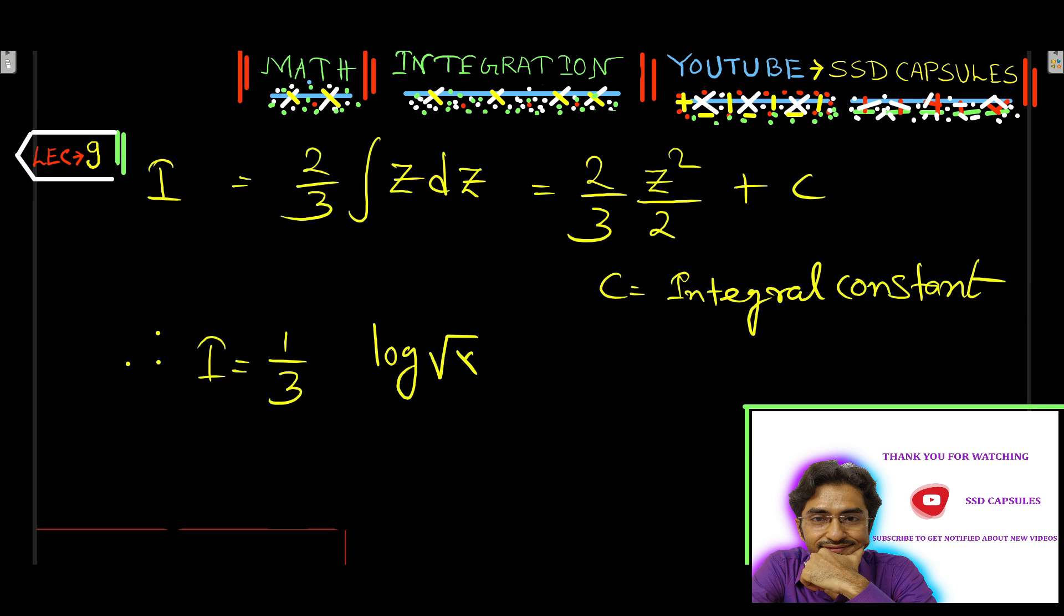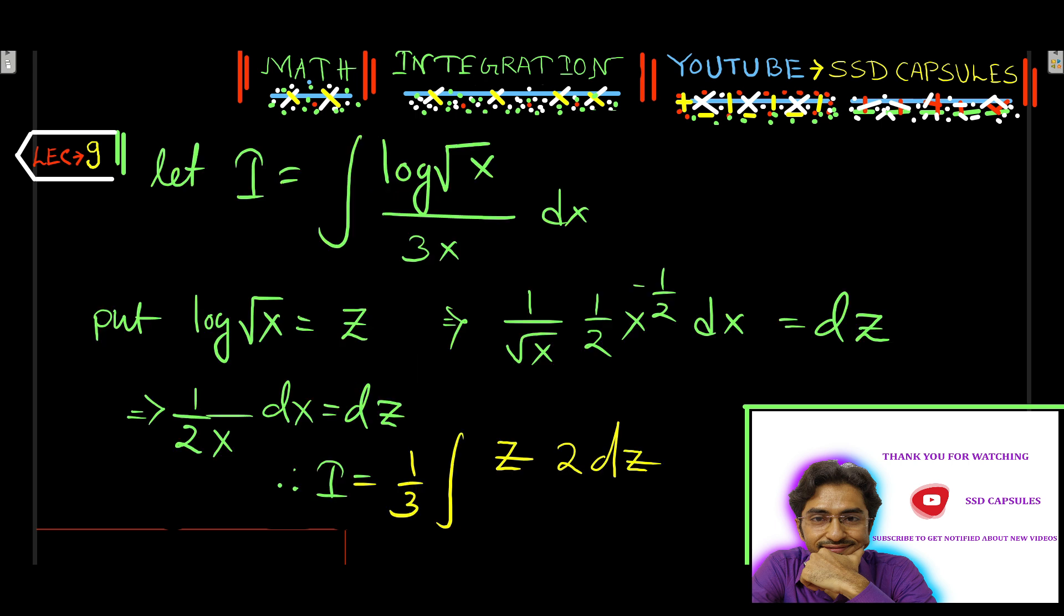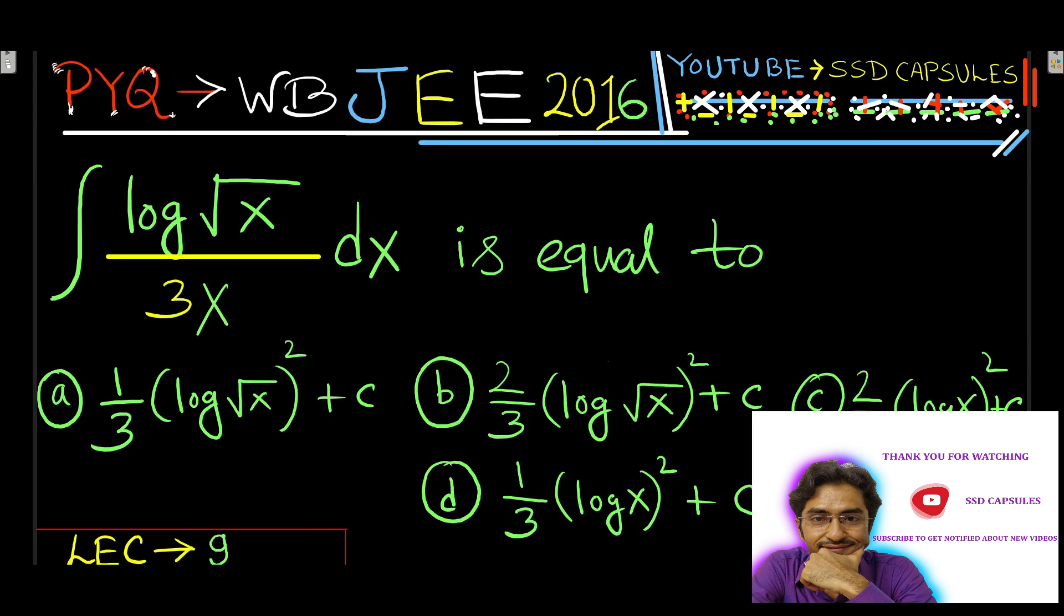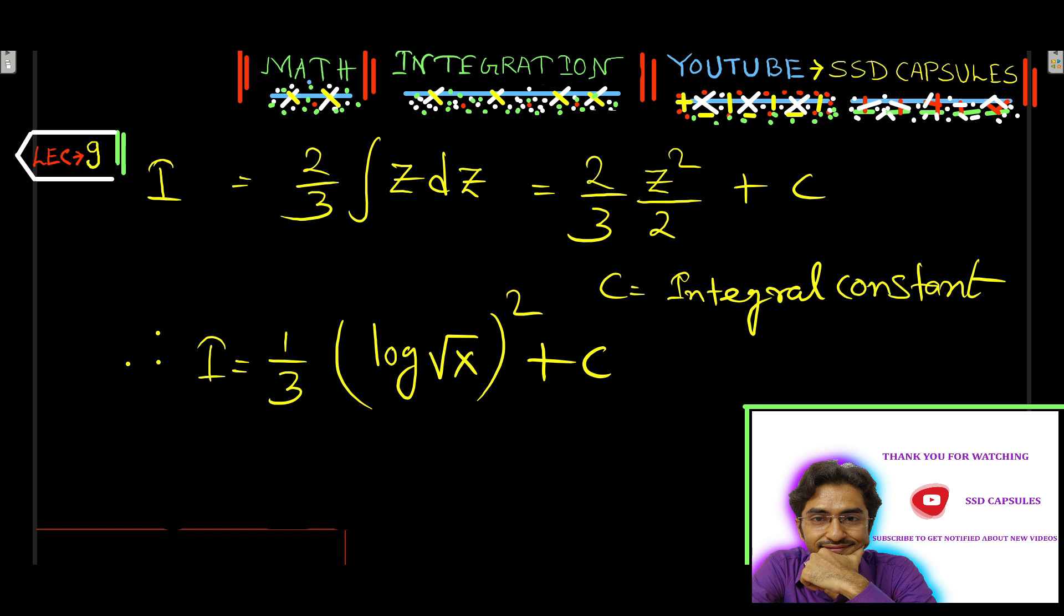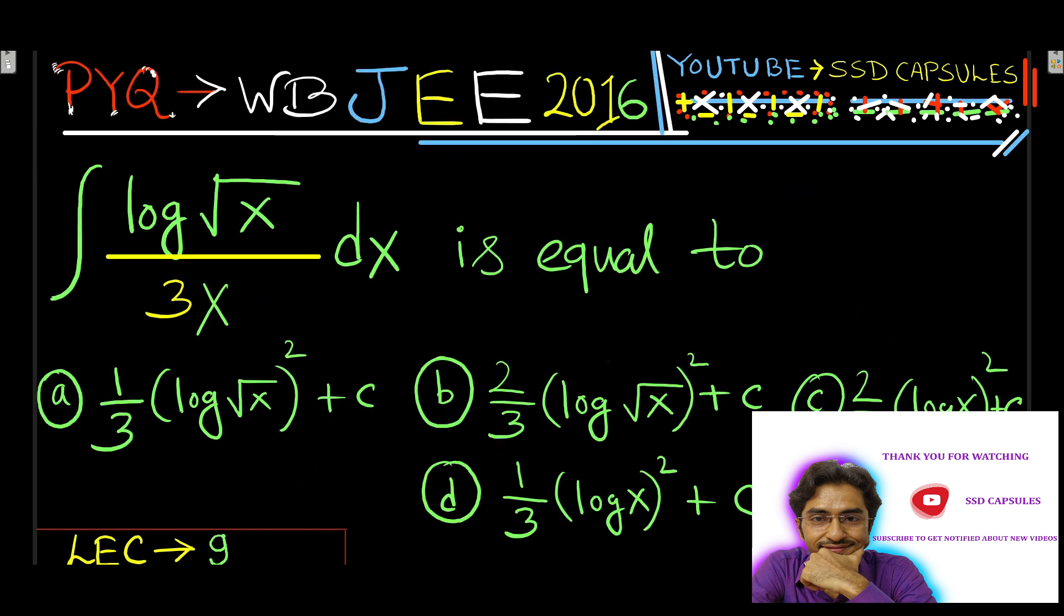We will check the options. 1 by 3 log root x whole square plus c. So option a is the correct option.